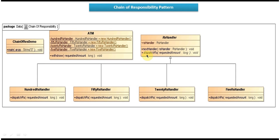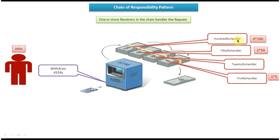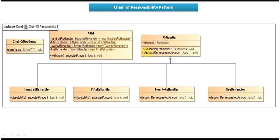All handlers implement the dispatchRupees method, which does some calculation and dispatches the amount — 100, 50, 20, and 5 Rupees notes respectively. The nextHandler method is used to set up the chain: for the 100 Rupees handler the next handler is the 50 Rupees handler, for the 50 Rupees handler it is the 20 Rupees handler, and for the 20 Rupees handler it is the 5 Rupees handler.